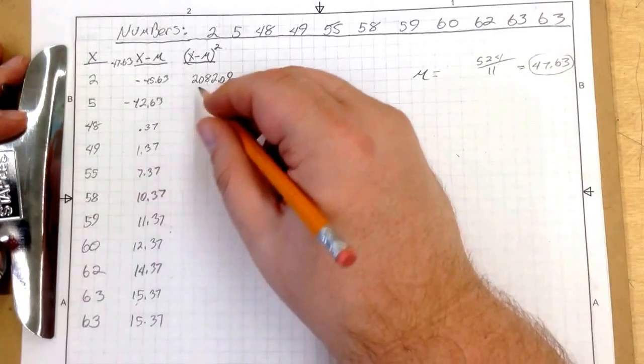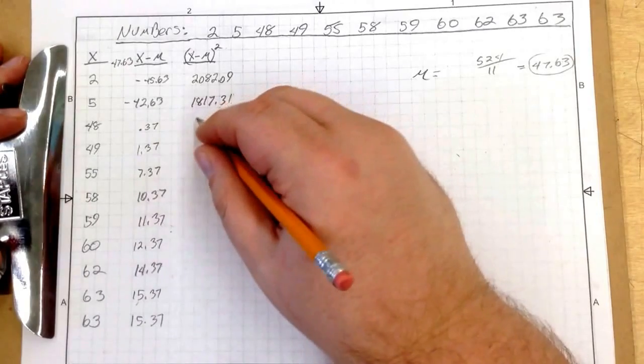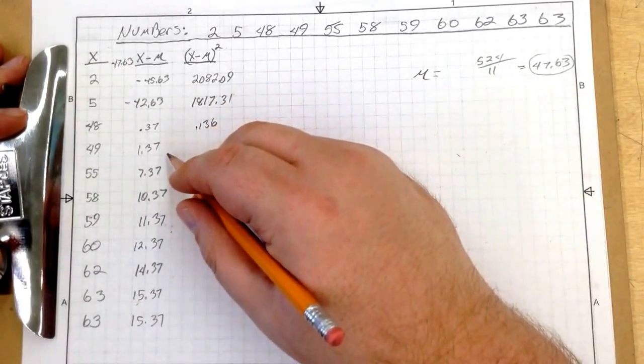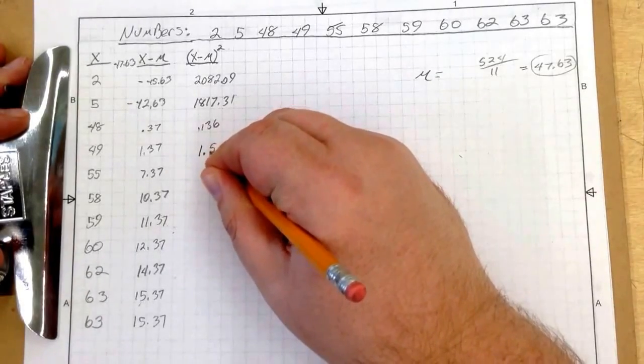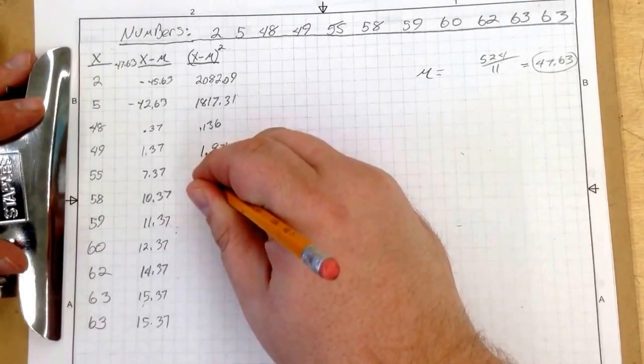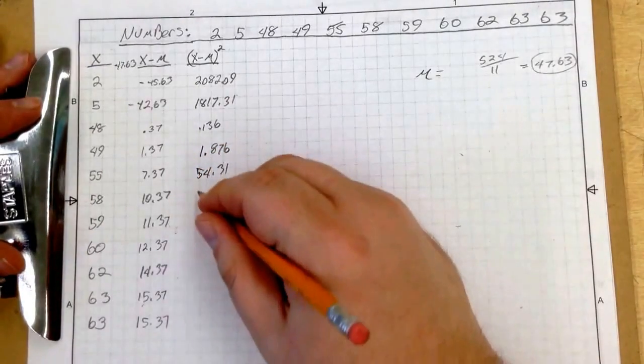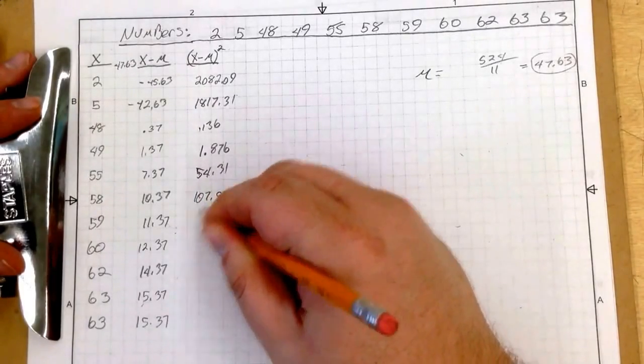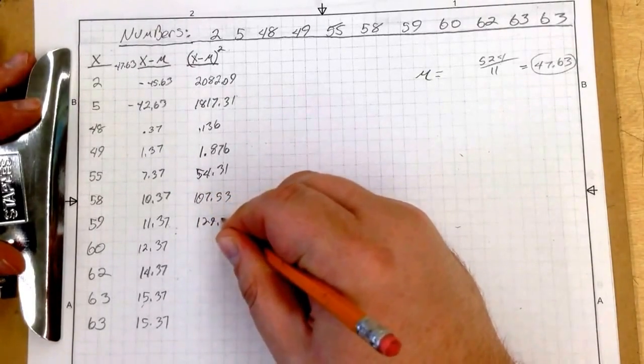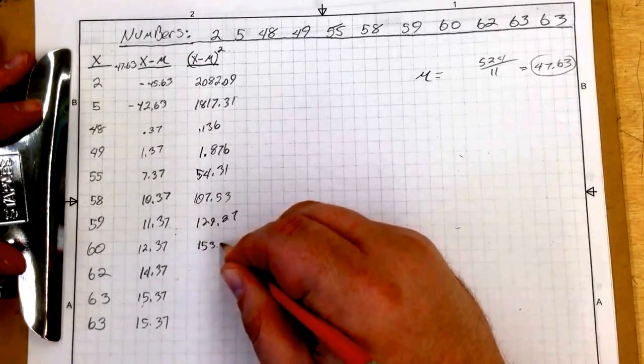42.63 squared is 1817.31. 0.37 squared is 0.136. 1.37 is 1.876. 7.37 squared is 54.31. 10.37 squared is 107.53. 11.37 squared is 129.27.